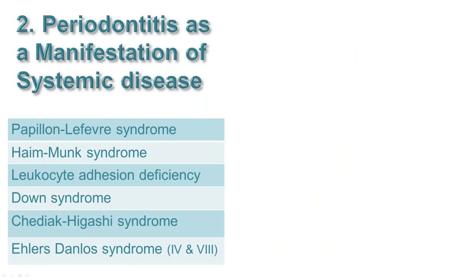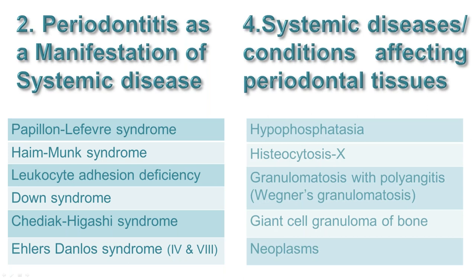Periodontitis as a manifestation of systemic disease: the obvious ones include Papillon-Lefèvre syndrome, Haim-Munk syndrome, leukocyte adhesion deficiencies, Down syndrome, Chédiak-Higashi, and Ehlers-Danlos. When it comes to systemic diseases affecting periodontal tissues, there are many, ranging from hypophosphatasia and histiocytosis X to Wegener's granulomatosis — now called granulomatosis with polyangiitis — and then neoplasms and giant cell granulomas.